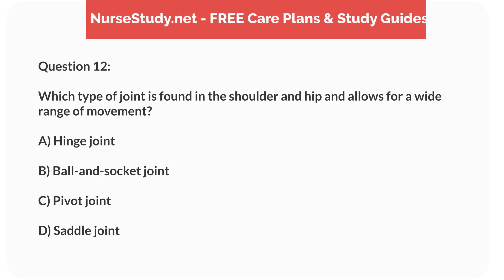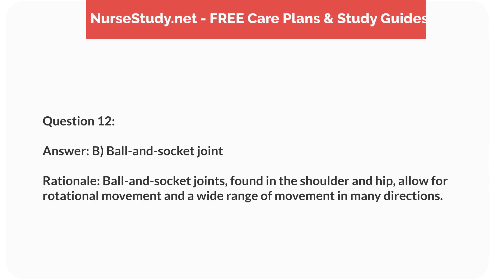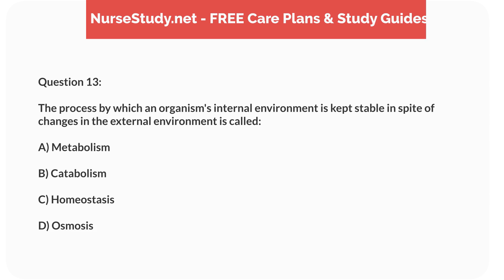A) hinge joint, B) ball and socket joint, C) pivot joint, D) saddle joint. Answer: B, ball and socket joint. Rationale: Ball and socket joints, found in the shoulder and hip, allow for rotational movement and a wide range of movement in many directions. Question 13: The process by which an organism's internal environment is kept stable in spite of changes in the external environment is called...